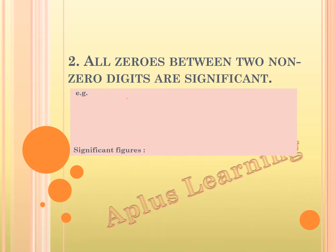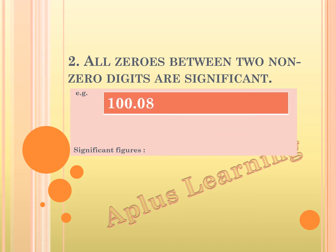Rule 2: all zeros between two non-zero digits are significant. Let's see the number 100.08. The zeros between the non-zero numbers are to be counted. Here, we have 1 and 8 as the non-zero numbers, and all the zeros between these two non-zero digits are to be counted. We have the significant figure as 5.